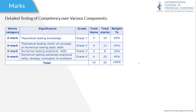These are the detailed testing of competency over various components. Grade 1 is a 2-mark question, grade 2 is a 3-mark question, grade 3 is a 4-mark question, and grade 4 is a 5-mark question. In the 2-mark questions, there is theoretical knowledge testing — completely based on theory. The 3-mark question is theoretical testing or clarity of concepts, or may be related to numerical testing. The 4-mark and 5-mark questions are totally based on numerical ability and analytical skills.